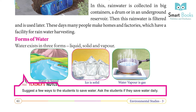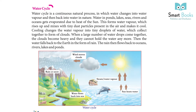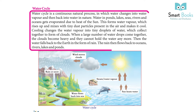Water cycle: the water cycle is a continuous natural process in which water changes into water vapor and then back into water.